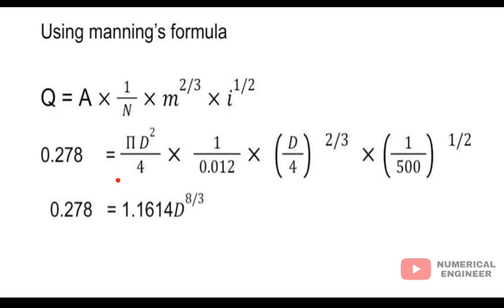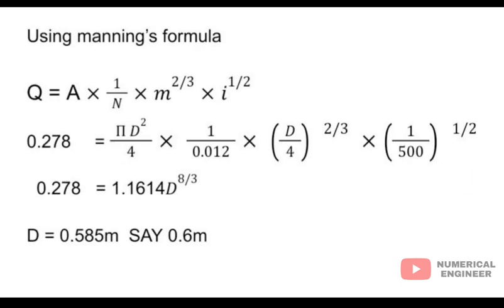Now we get the values: this gives 1.1614 d power of 8.3. Now we calculate the d value, the diameter, is 0.585 meter, say that's 0.6 meter of diameter.